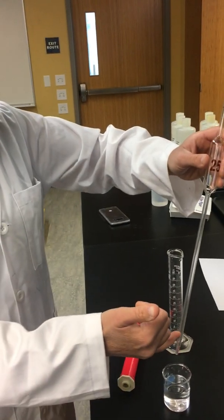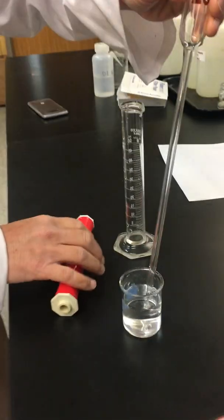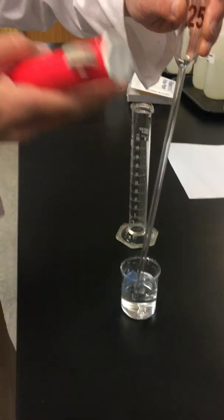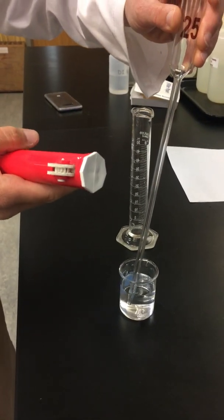Now we want to make sure the tip of the volumetric pipette is submerged in the liquid. Otherwise, when you start to pull up the liquid, you start to get splattering and air bubbles, and we want to avoid that.